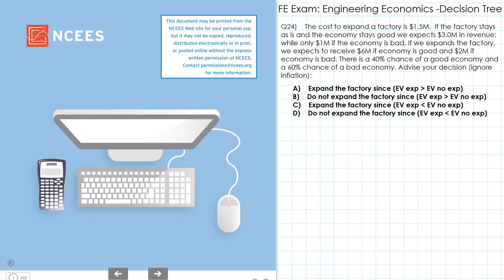For career engineers, our problem states that the cost to expand the factory is $1.5 million. If the factory stays as is and the economy stays good, we expect $3 million in revenue, while only $1 million if the economy is bad. If we expand the factory, we expect to receive $6 million if the economy is good and $2 million if the economy is bad. And there is a 40% chance of a good economy and 60% chance of bad economy.